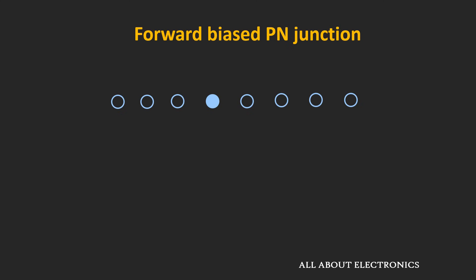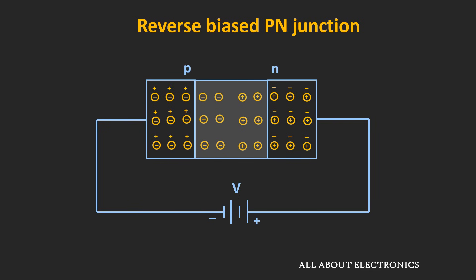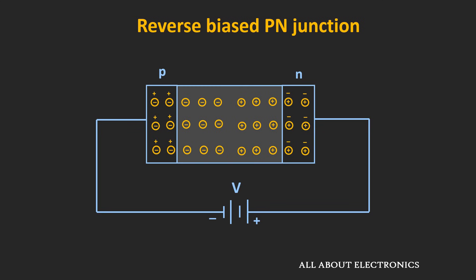Now let's see when the p-n junction is reverse biased. In the reverse biased condition, the negative terminal of the battery is connected to the p-side and the positive terminal is connected to the n-side. In this condition, the electrons which are majority carriers in the n-type region get attracted towards the positive terminal of the battery, and the holes on the p-side get attracted towards the negative terminal. Due to that, more ions get created near the junction, so the width of the depletion region increases. As we increase the reverse bias voltage, the depletion region widens further, offering more resistance to majority carriers, so virtually there is no flow of current due to majority carriers.